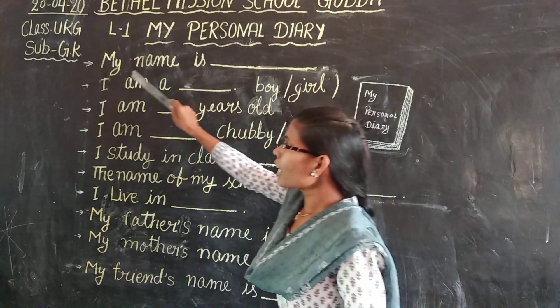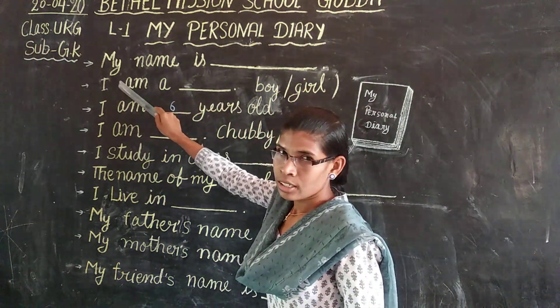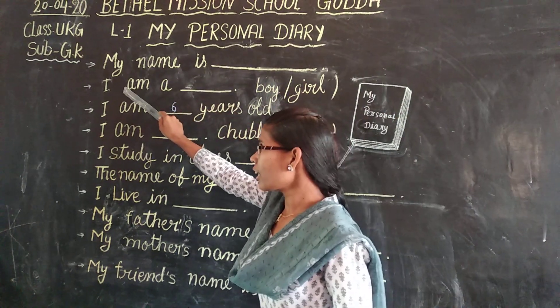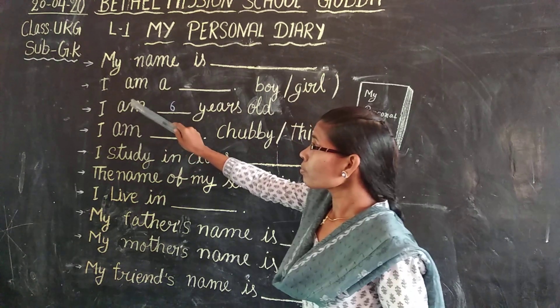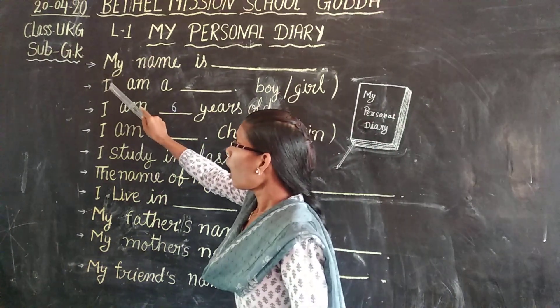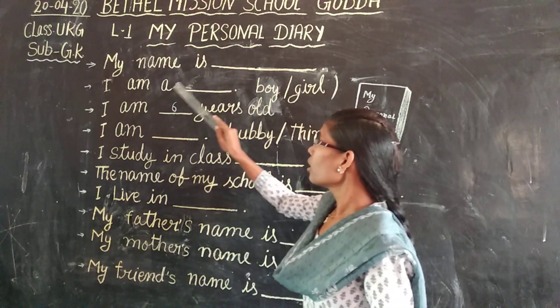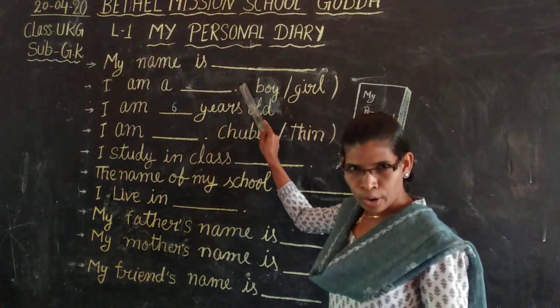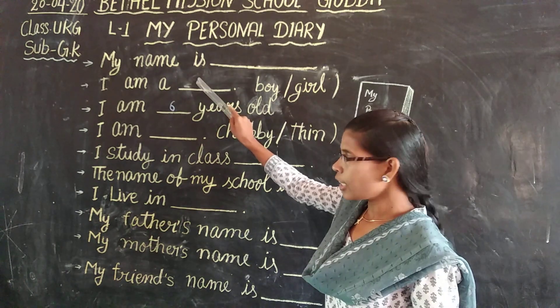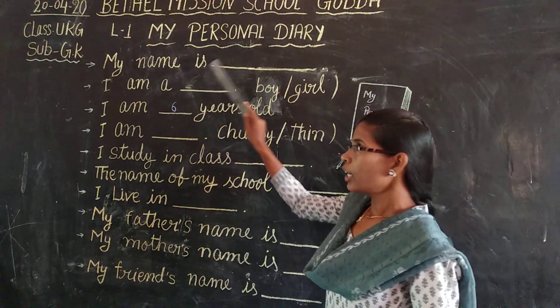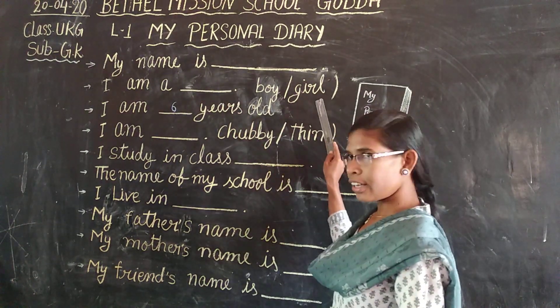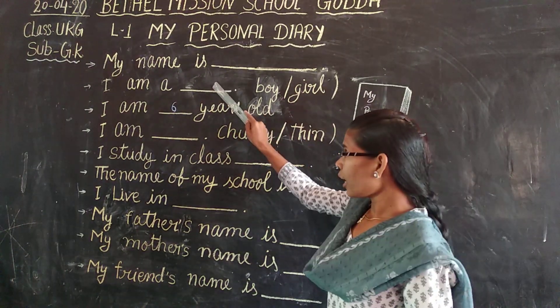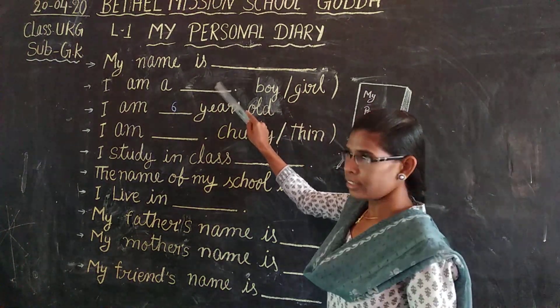Now see the second line. I am a boy. If you are a boy, you write 'boy'. If you are a girl, you have to write 'girl'.